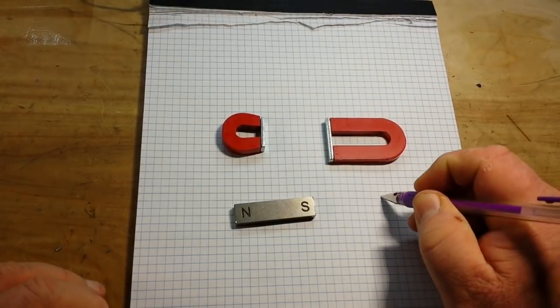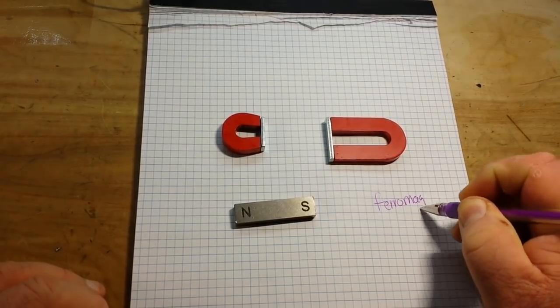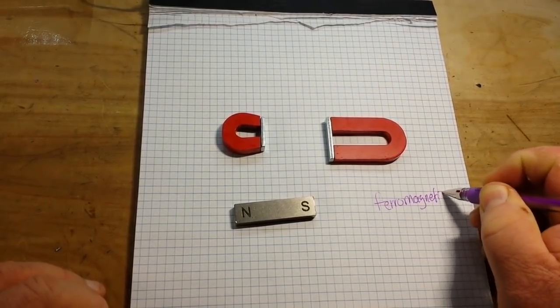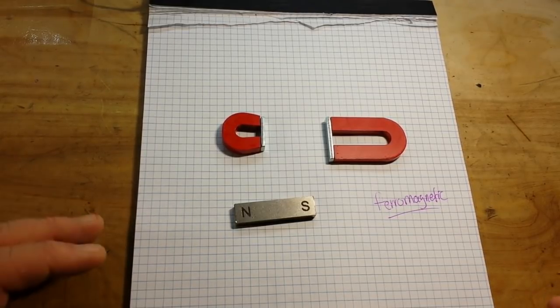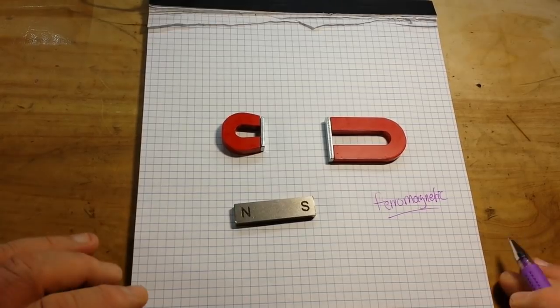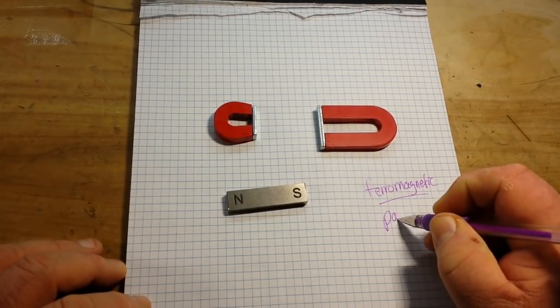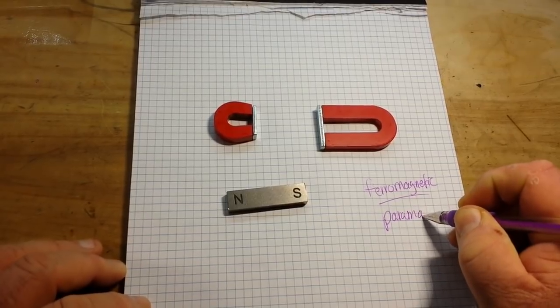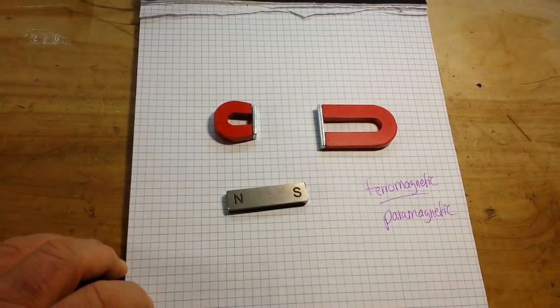We have things that are called ferromagnetic, and they can be easily magnetized - a piece of steel, a piece of iron, nickel, cobalt. These are all ferromagnetic. Then we have paramagnetic, and things that are paramagnetic are considered slightly magnetic. Aluminum is paramagnetic.